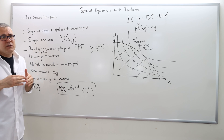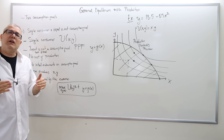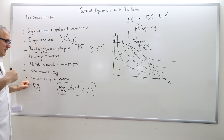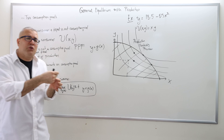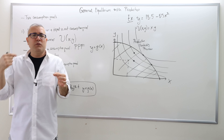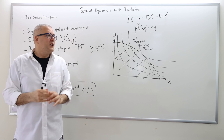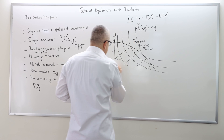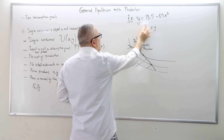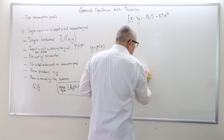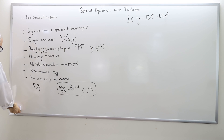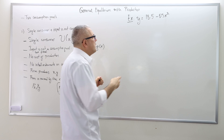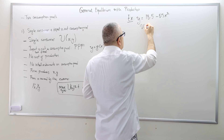This assumption is important. When we have two agents, it will change the outcome depending on whether one agent owns the entire company or whether they share the firm equally or with some other ratio.